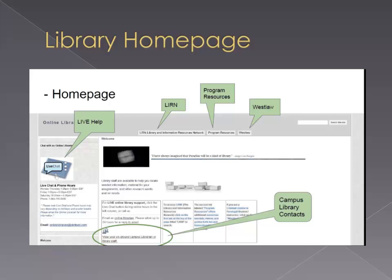Now that we know how to log into the online library, here is a screenshot of what the home page of the library website looks like. On the left-hand side of the page, we have our live chat help button. And at the top of the page, we have links to take our faculty and students to our research databases in LIRN. Additionally, we have our program resources and the Westlaw legal database.